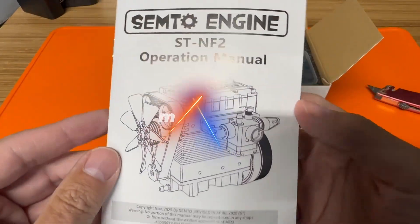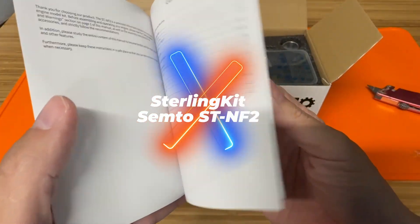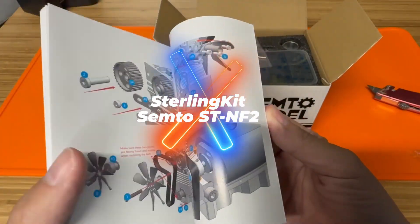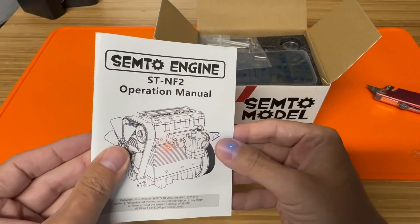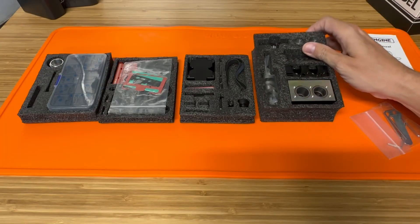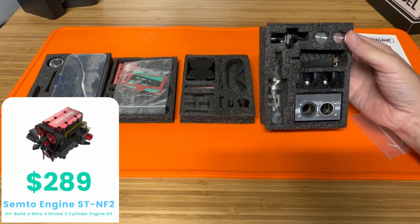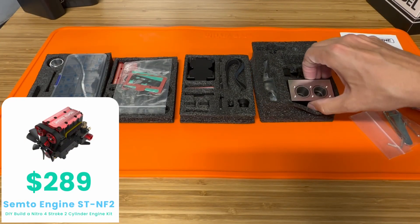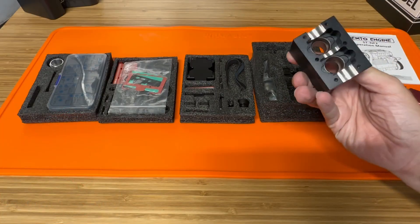This is the Samoto ST NF2 four-stroke 7cc engine sent to me from Sterling Kits. This is a complete four-stroke kit that you build yourself. It runs off of RC nitro fuel.